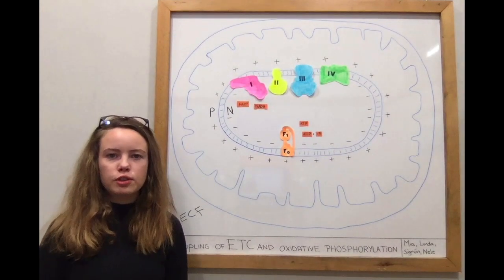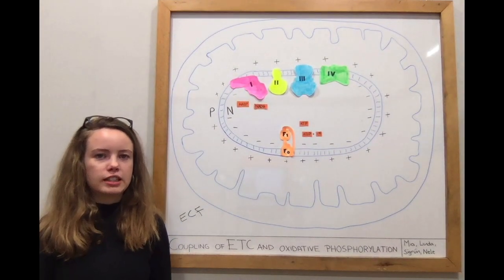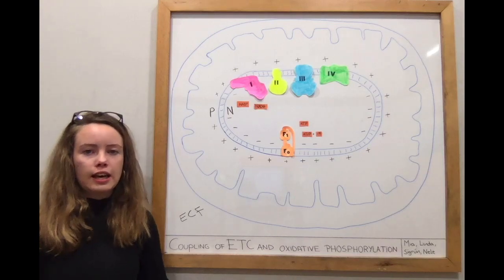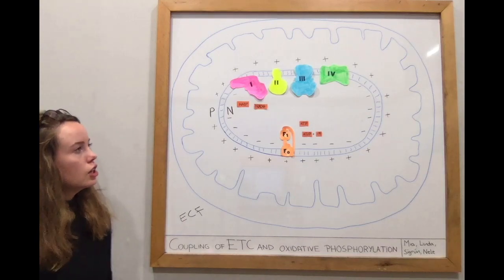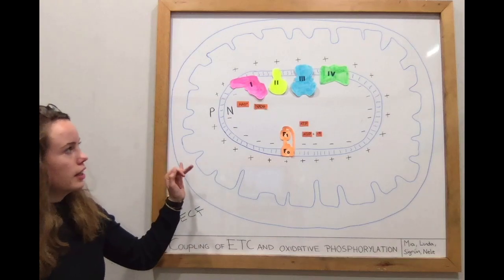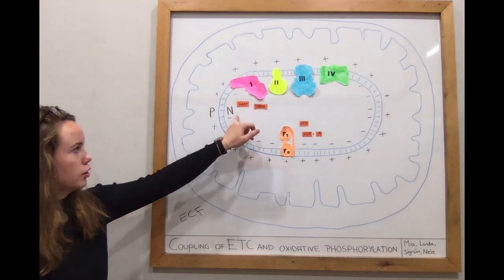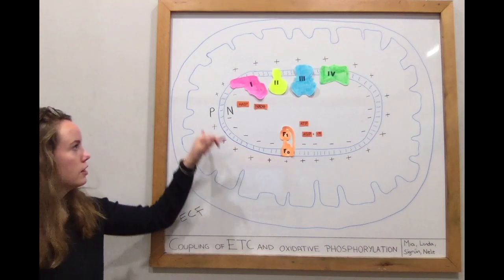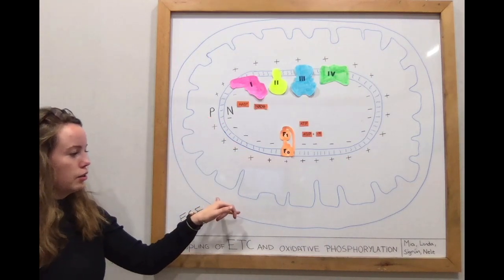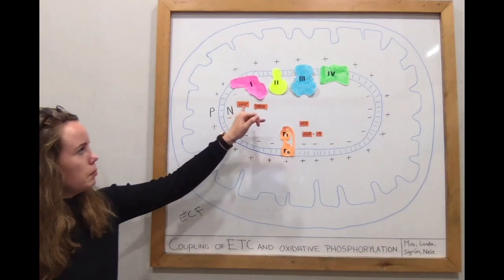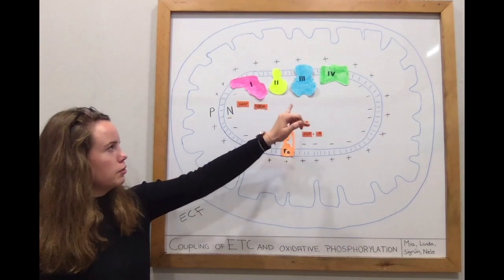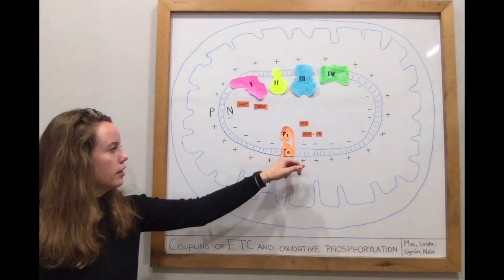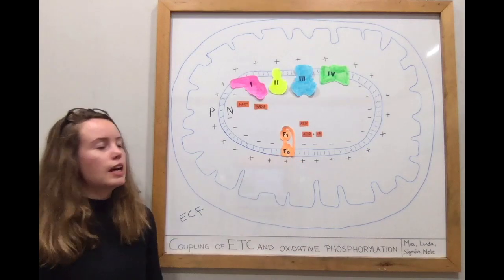Welcome to a new biochemistry lesson. Today we'll talk about coupling of the electron transfer chain and oxidative phosphorylation. We have drawn for you a mitochondria here with the matrix, also called the inside, the inner membrane, the intermembrane space also called the p-side, and the outer membrane. The complexes from one to four are part of the electron transfer chain.